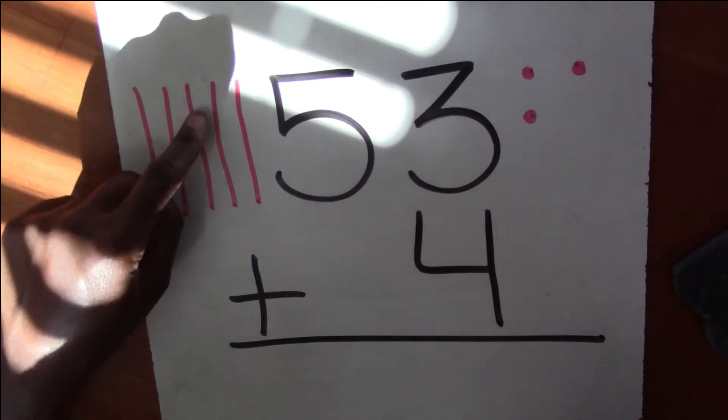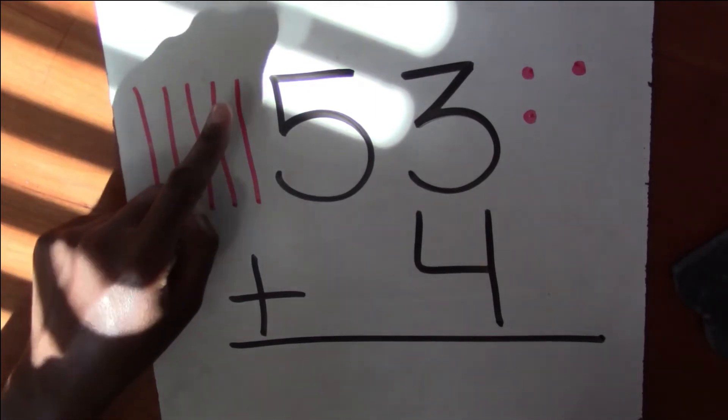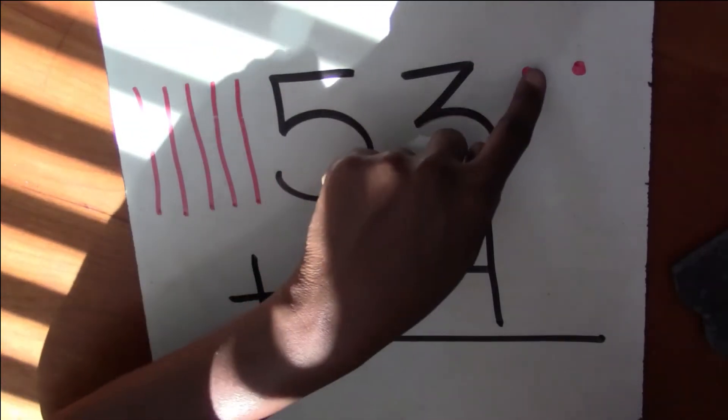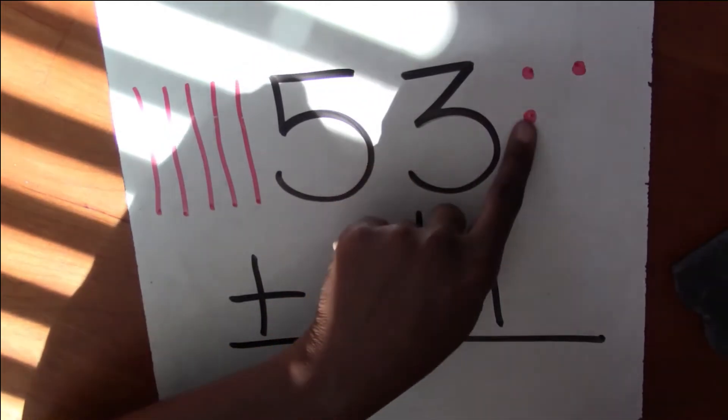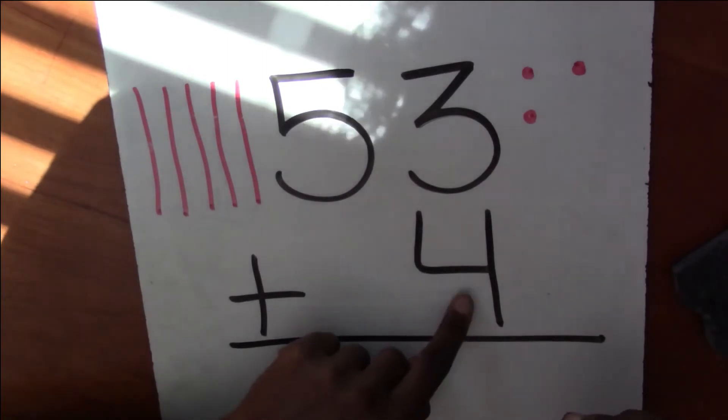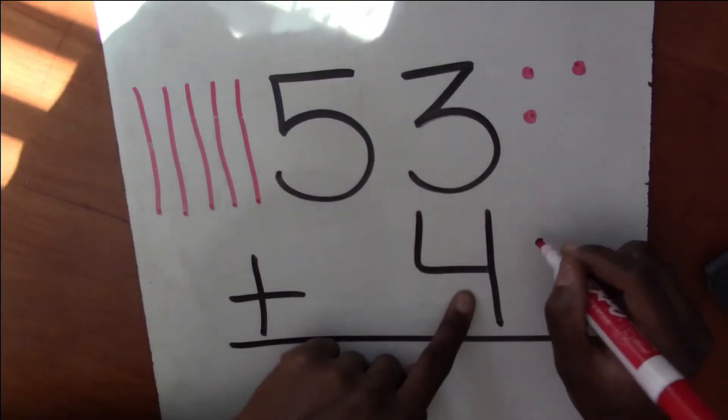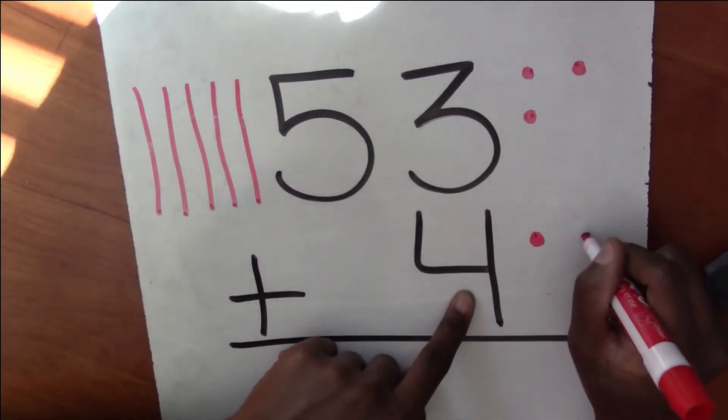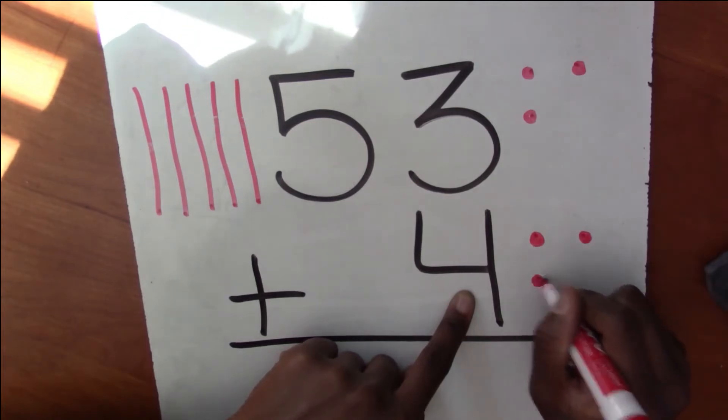So this should be 53. 10, 20, 30, 40, 50, 51, 52, 53. Good job. I drew it right. Now I need four ones. So I'm going to draw four ones. One, two, three, four.